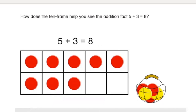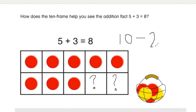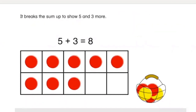How does the ten frame help you see the addition fact five plus three equals eight? Did you use the rows to think about the groups? We're adding the first group of five to the second row, the second group of three. Or maybe you used our tens frame strategy of what's missing. You know we have two boxes missing, so we have a full tens frame — take away two missing. Take away one is nine, take away two is eight. We have eight in all.